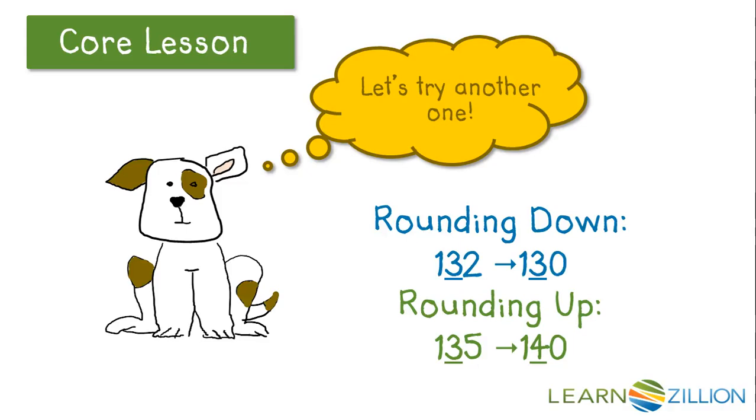If we round up, 135 is at the midpoint and it would round up to 140. Notice again, the three turns into a four.